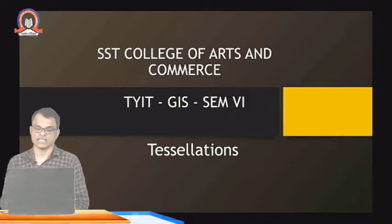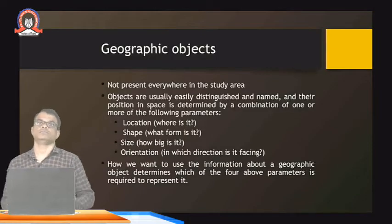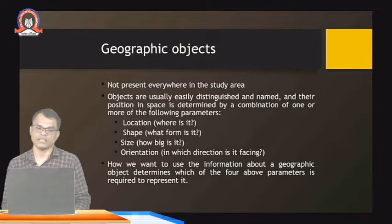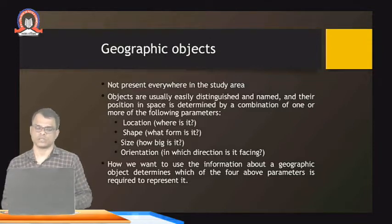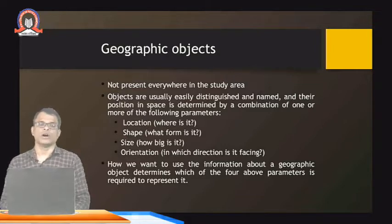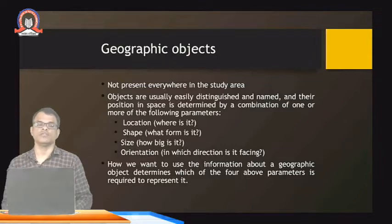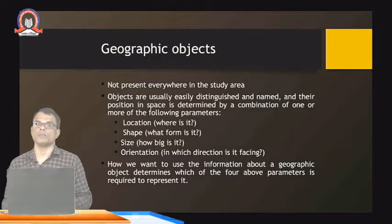The topic for discussion is tessellation. Before we start knowing about tessellation, first we will know about geographic objects. Around us there are many objects, and on this earth you can consider many different objects — those are called geographic objects, like land, trees, roads, and many others. These are present everywhere in the study area, and they are usually easily distinguished and named. Their position in space is determined by a combination of one or more parameters.